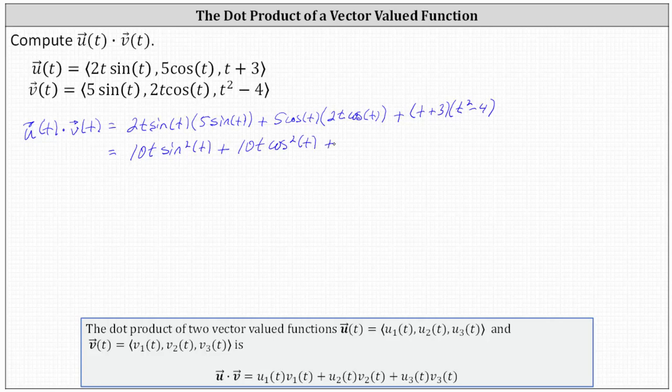Multiplying the two binomials, we first have t times t squared, which is t cubed, plus t times negative four, which simplifies to minus four t, plus three times t squared, which is plus three t squared. And finally, plus three times negative four, which simplifies to minus 12.